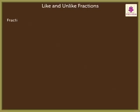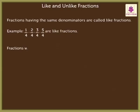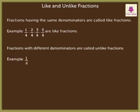Next, let us know about like and unlike fractions. Fractions having the same denominators are called like fractions. For example, one-fourth, two-fourth, three-fourth, and five upon four are like fractions. Fractions with different denominators are called unlike fractions. For example, one-fourth, two-fourth, two upon three, one upon seven, and five upon eight are unlike fractions.